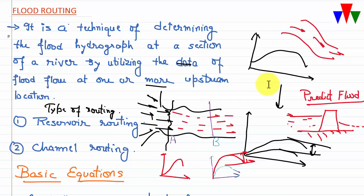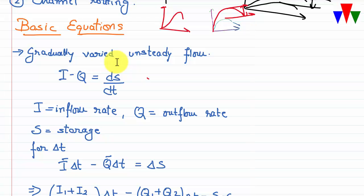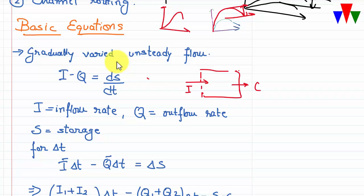The basic equation used in flood routing is the continuity equation: input minus output equals dS/dt, meaning the change in storage with respect to time equals inflow minus outflow. For a reservoir with inflow I, outflow Q, and storage S, this gives us: inflow minus outflow equals change in storage.